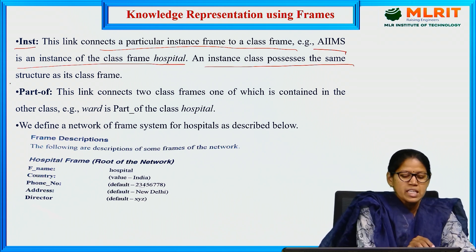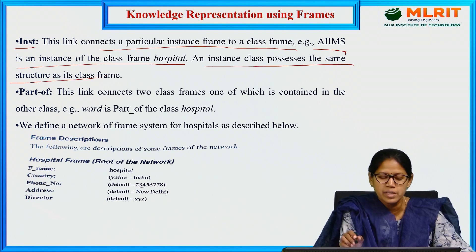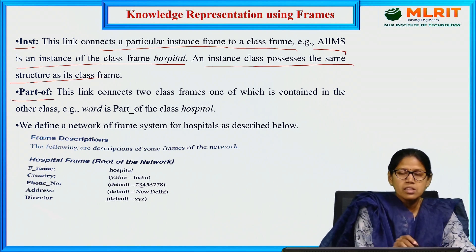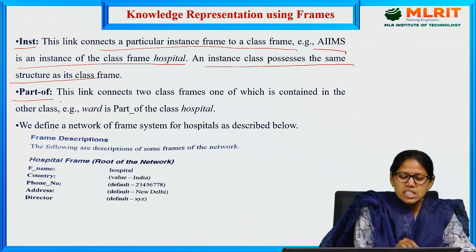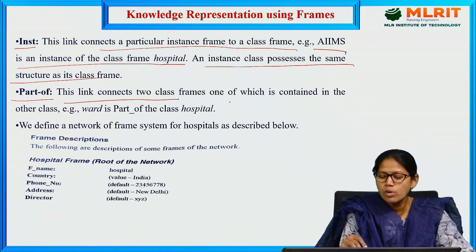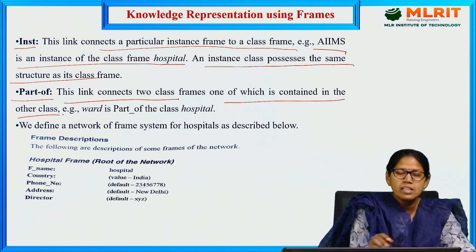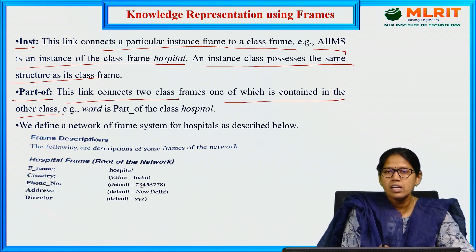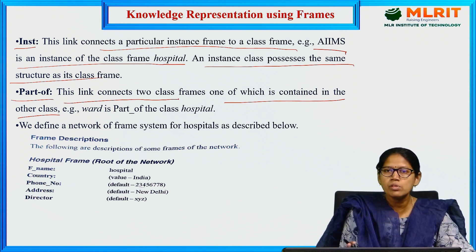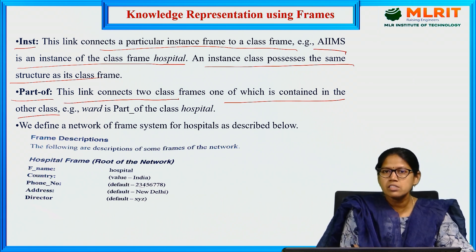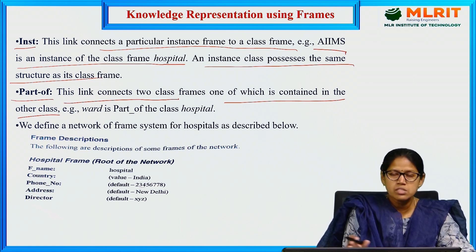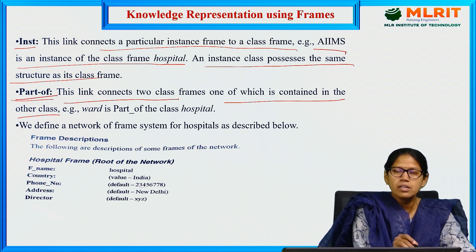An instance frame possesses the same structure as its class frame. The third term is 'part of' — this link connects two class frames, one of which is contained in the other. For example, child hospital and heart hospital share common things represented with part-of. Doctors, wards, and labs are common — these three are taken as part-of relations.